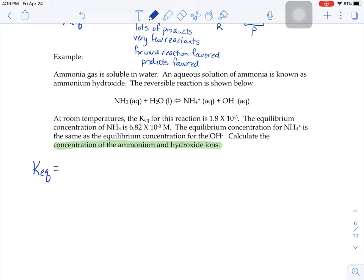So we have to do products over reactants. So that ammonium ion is aqueous, it would have a molarity. The hydroxide ion aqueous, it would have a molarity. The ammonia would also have a molarity, but I'm gonna leave the water out because it's a liquid. Solids and liquids don't go in equilibrium expressions, they don't have molarities.